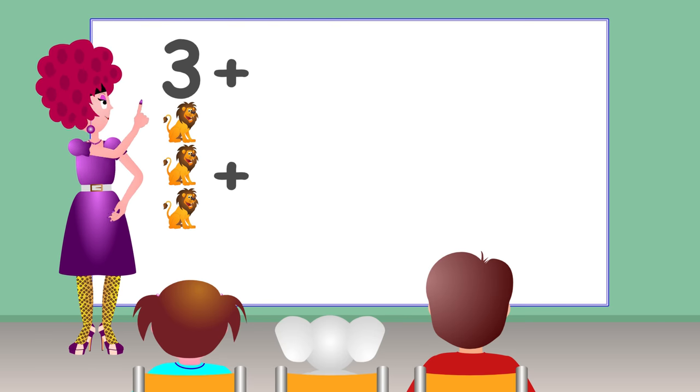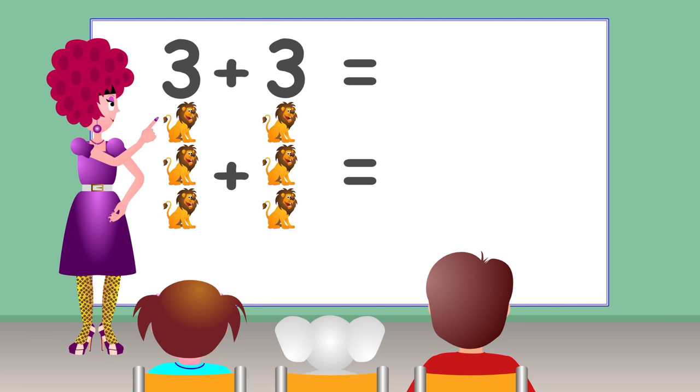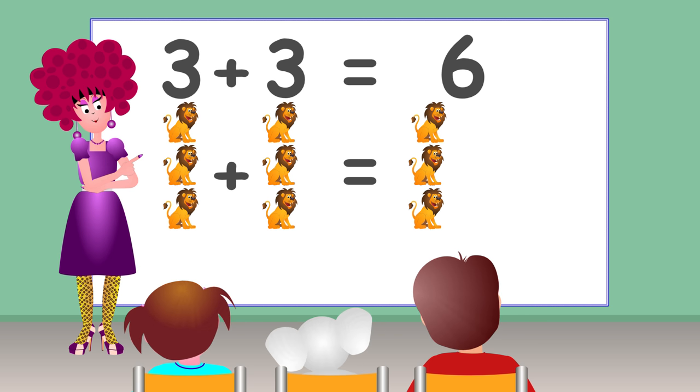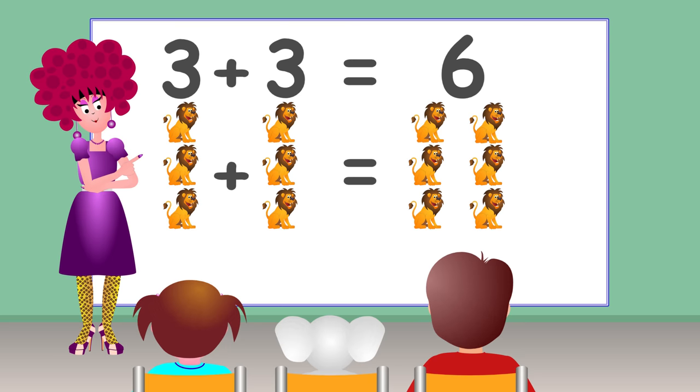Lion. Three plus three equals six. One, two, three, four, five, six.